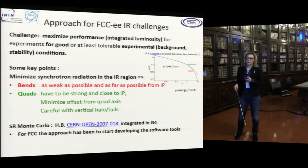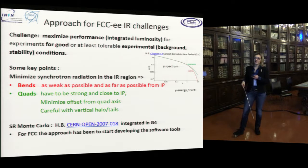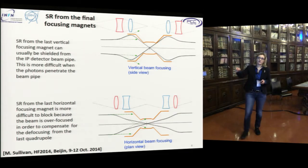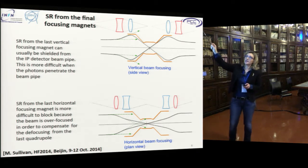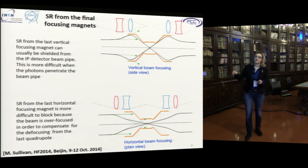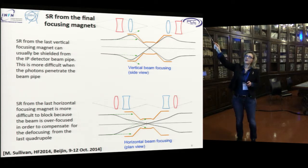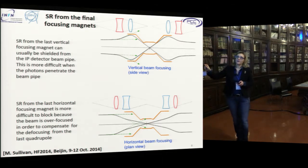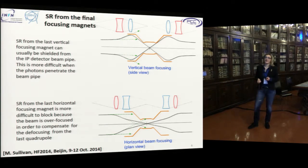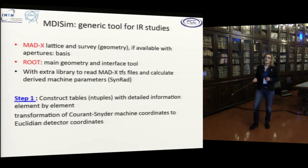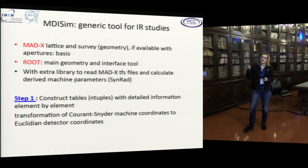The Monte Carlo has been implemented and integrated into Geant4/Force. We started developing the software tools to be ready when the optics were ready to evaluate synchrotron radiation. This is a picture from Mike Sullivan's last B-factory workshop in Beijing, which clearly shows that the synchrotron radiation from the last vertical focusing magnet can usually be shielded from the detector beam pipe, but this is more difficult when photons penetrate the beam pipe. The synchrotron radiation from the last horizontal focusing magnet is more difficult to block because the beam is over-focused.